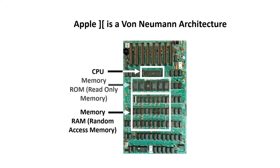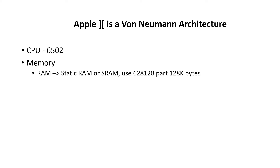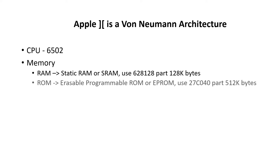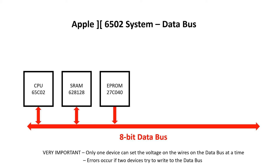Now we need to hook up the read-only memory or ROM. In this build, I'm going to use an erasable programmable ROM or EEPROM. The particular part I want to use actually stores 512KB, which is 8 times larger than I need, so I'll just tie the upper address bits to ground. The EEPROM attaches to the bus just like the other devices do.